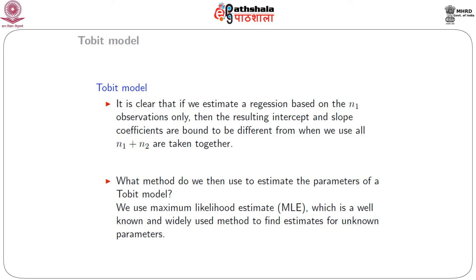In the logit model, P(yᵢ = 1) → 0 as β₀ + β₁x₁ᵢ → −∞, and P(yᵢ = 1) → 1 as β₀ + β₁x₁ᵢ → +∞. Thus, predicted probabilities remain in [0, 1]. In the probit model, we assume the error in the utility index model is normally distributed and use the normal CDF, so P(yᵢ = 1) = Φ((β₀ + β₁x₁ᵢ) / σ), where Φ is the standard normal CDF.